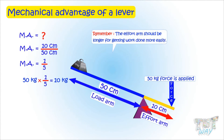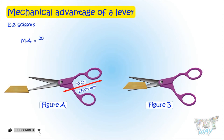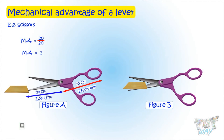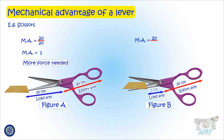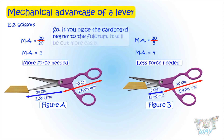Remember, the effort arm should be longer for getting work done more easily. Here we have a scissor. In Figure A, the length of the effort arm is 20 centimeters and the load arm is also 20 centimeters, so the mechanical advantage is 1. In Figure B, the length of the effort arm is 20 and the load arm is 5, so the mechanical advantage is 20 divided by 5, which equals 4. The higher the mechanical advantage, the lesser the force required. So if you place the cardboard nearer to the fulcrum, it will be cut more easily.